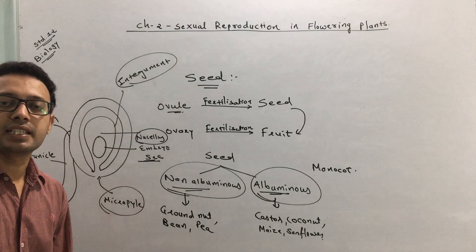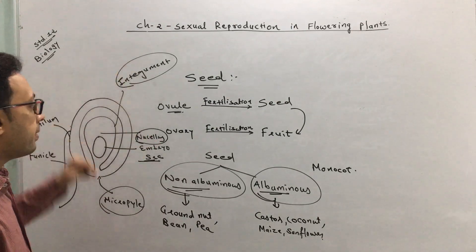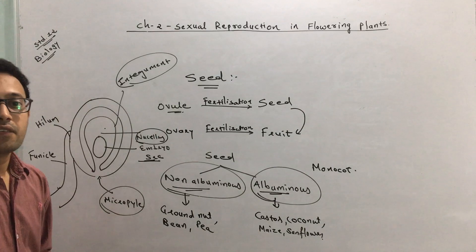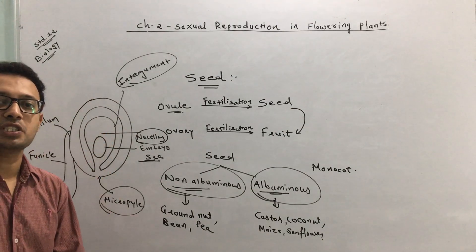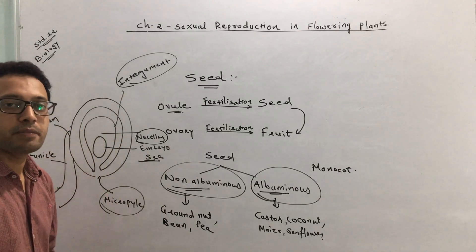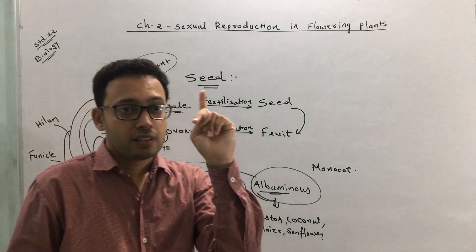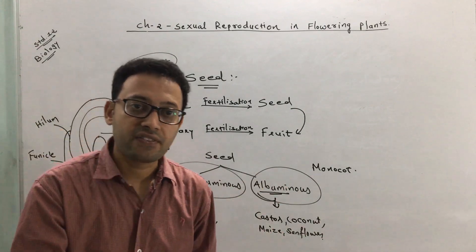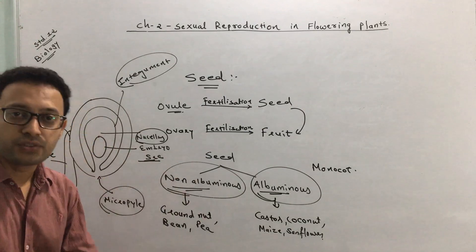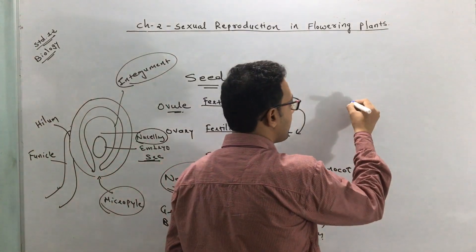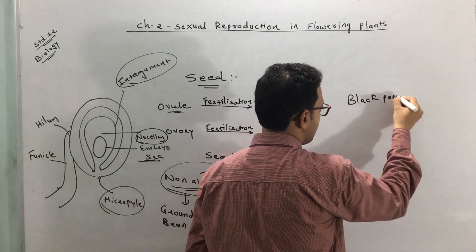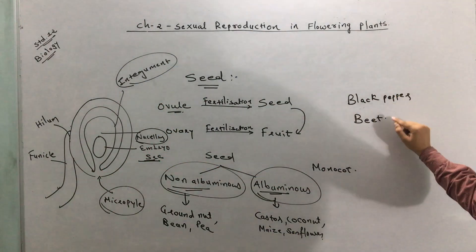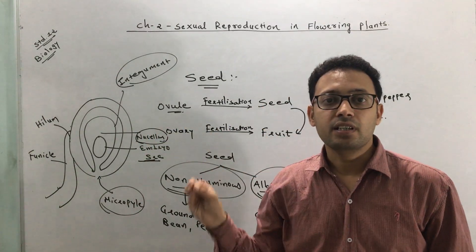When the embryo sac gets fertilized, it leads to formation of the endosperm and the embryo. But what happens to the other parts — nucellus, integuments, and micropyle? The nucellus is usually filled with reserve food material, which is utilized by the developing embryo sac. However, there are exceptions where food material in the nucellus is not fully utilized and remnants of food remain in the nucellus.